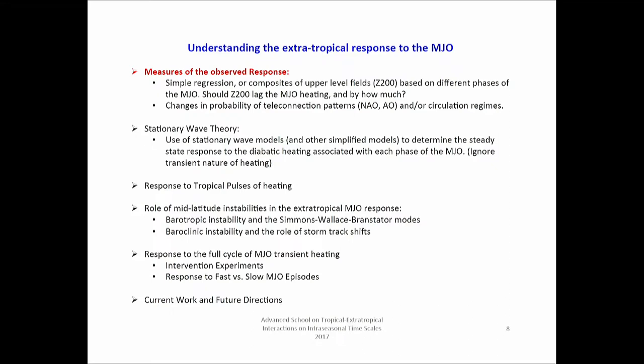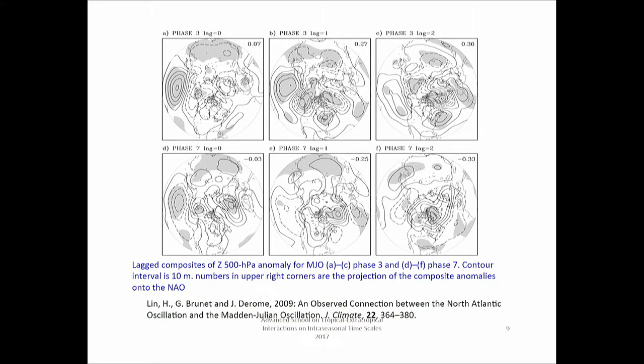This is a paper by Hai Lin showing the response of 500-millibar height to phase three with one pentad lag, five days, and ten days. They're different, and you can definitely see that by ten days you get a strong signal of what looks like a NAO-plus in the Atlantic — positive here and negative there. You also get something at phase seven that looks like a negative NAO. This is a standard way of looking at it, and it evolves after some time.